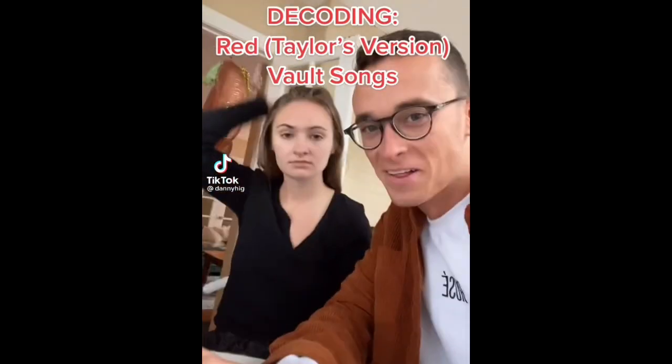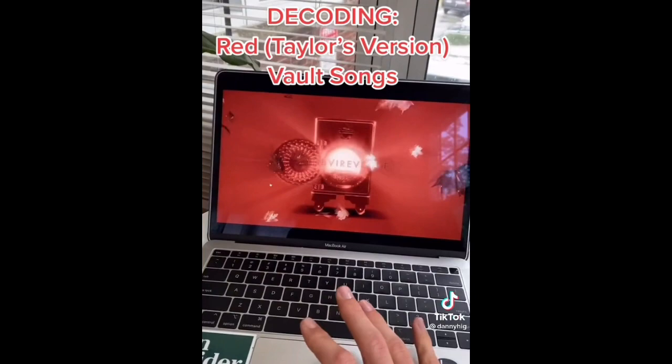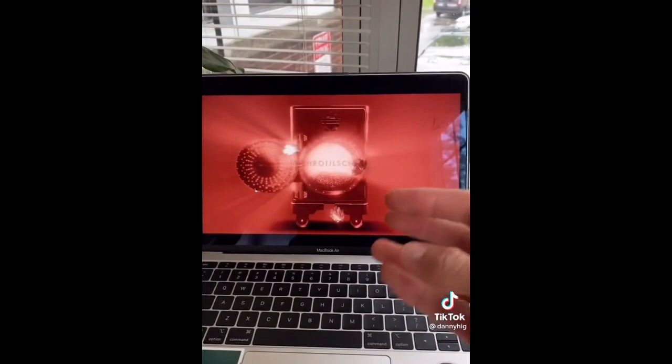Taylor just posted another message from the vault for Red. The first thing we notice is autumn leaves falling like pieces into place, so we have to solve a puzzle, and it's going to have to do with All Too Well. I hear a little All Too Well in the background.